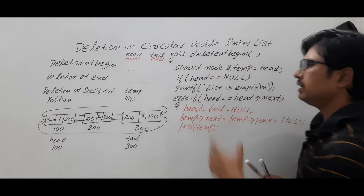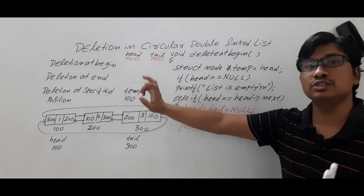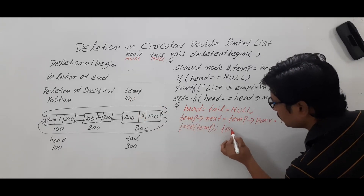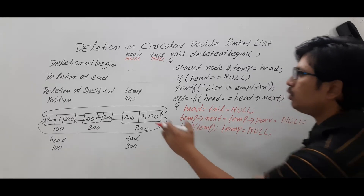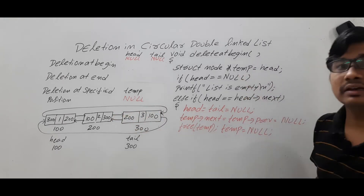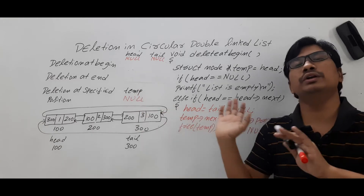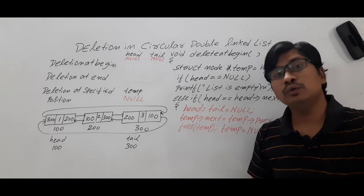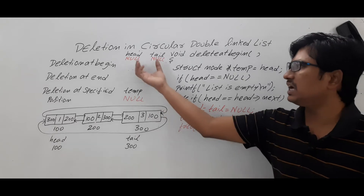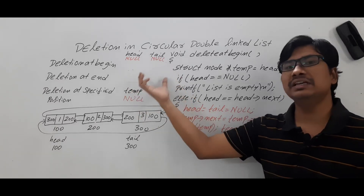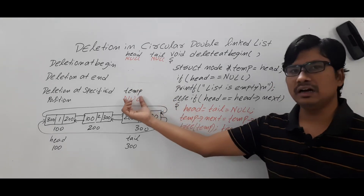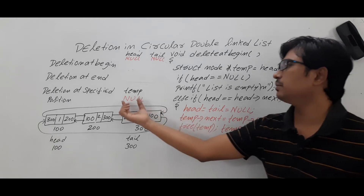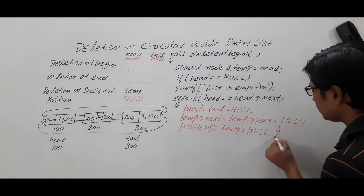After calling free, temp still holds the address 100 which no longer exists — that is a dangling pointer problem. To avoid this, assign null to temp. A null pointer (not pointing to any memory location) is better than a dangling pointer (pointing to a non-existing memory location). Now close the else-if block.